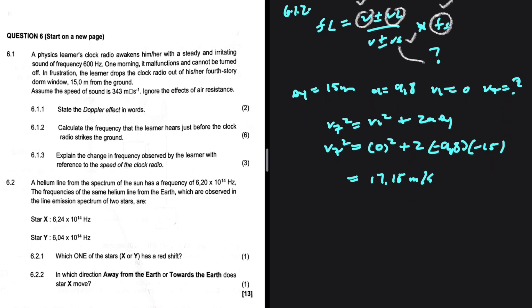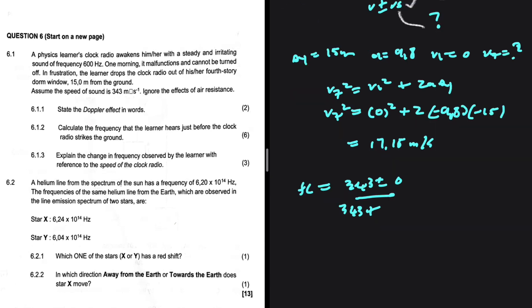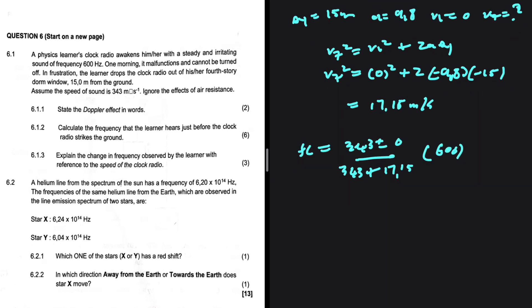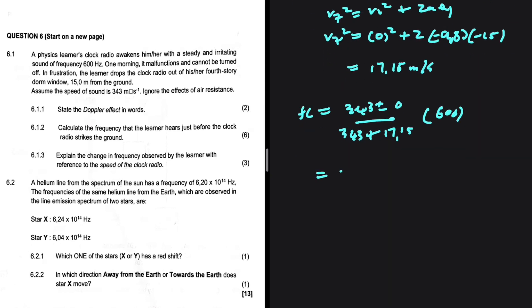So we can go ahead and substitute now. So FL = (343 + 0) / (343 + VS) × FS. The sound is moving away, so we're supposed to have a plus sign on the denominator. So plus 17.15, everything multiplied by the frequency of the source, which is 600 Hz. If you put that in your calculator, you should get 571.43 Hz.